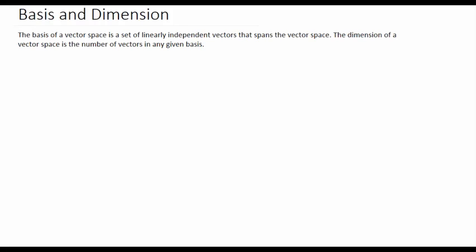Here, we'll talk about basis and dimension. So we'll start by defining those two words. The basis of a vector space is a set of linearly independent vectors that spans the vector space. And the dimension of a vector space is the number of vectors in any given basis.